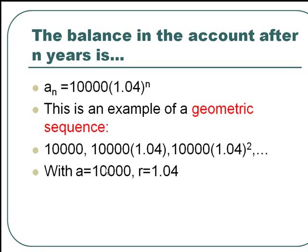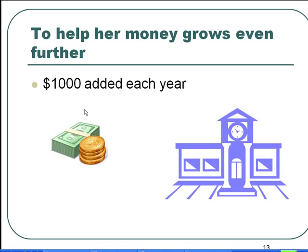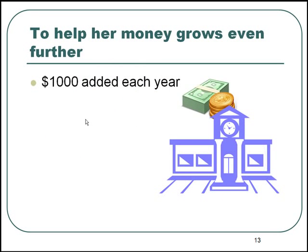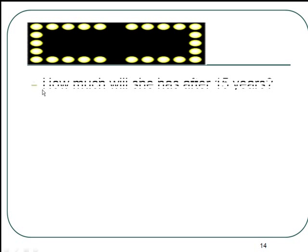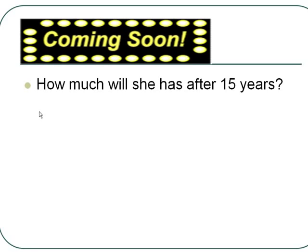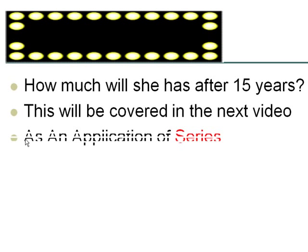With the first term a equal to $10,000 and the common ratio r equal to 1.04. To help her money grow even further, she decides she can add $1,000 to her savings each year to earn even more interest. How much will she have after 15 years? This will be covered in the next video as an application of series.